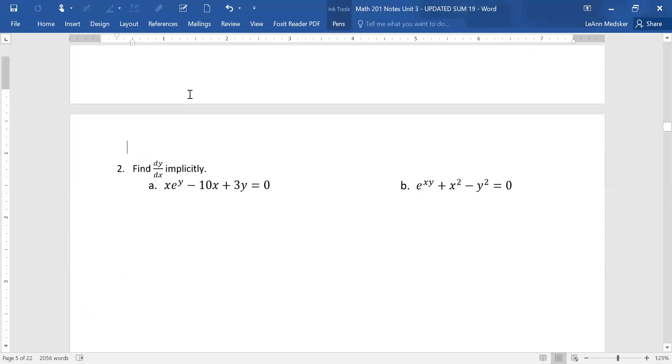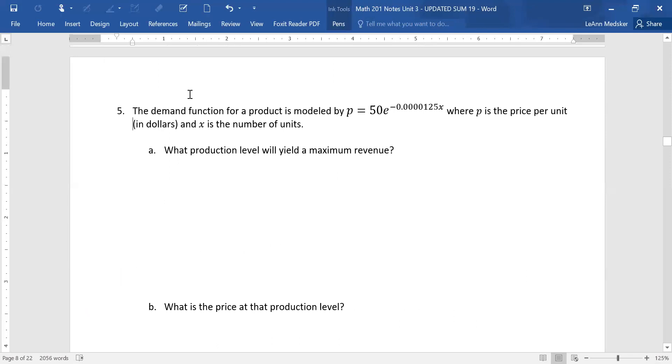Okay, we had one more that we skipped over in section 4.3. It was number 5, the very last page of 4.3. It's a multi-part problem, so we're going to work through it. It says the demand function for our product is modeled by P equals 50 times E to the negative 0.0000125X, where P is the price per unit in dollars, and X is the number of units.